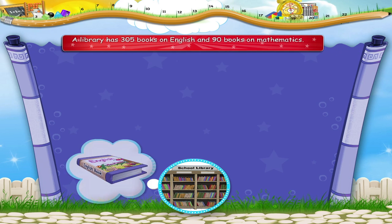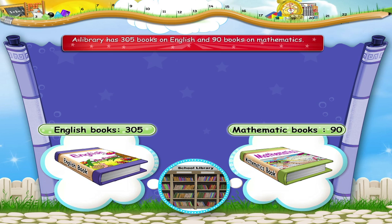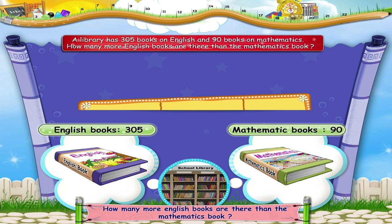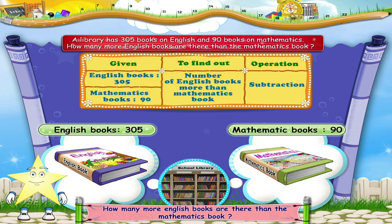A library has 305 books on English and 90 books on Mathematics. How many more English books are there than Mathematics books? Given: English books — 305, Mathematics books — 90. To find out: number of English books more than Mathematics books. Operation: Subtraction.